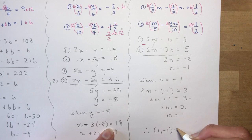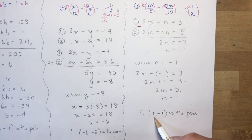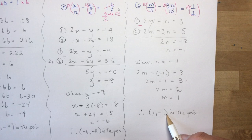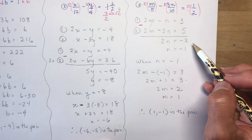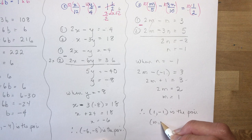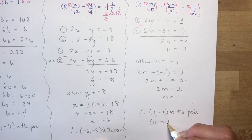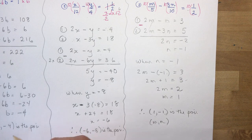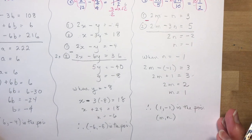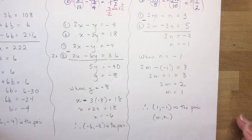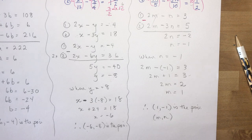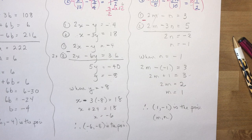So m equals 1 and n equals minus 1. The point of intersection is (1, minus 1) — remember m comes before n in the ordered pair. That's how you work with fractions using elimination. This is grade 10 math in the Ontario curriculum. If you haven't subscribed, please do. Hope you have a wonderful school year — bye for now!